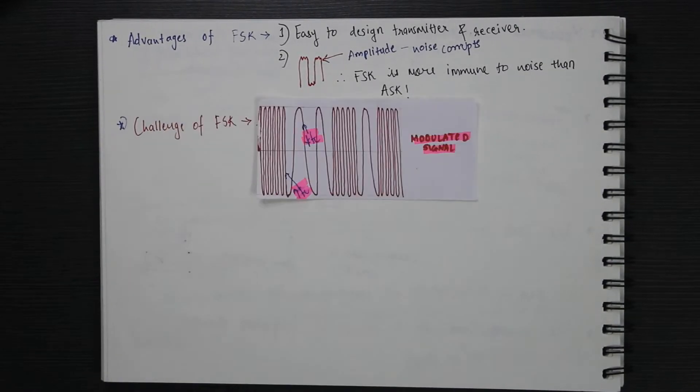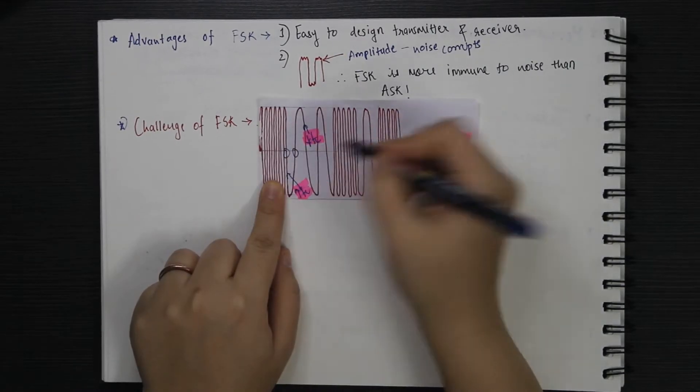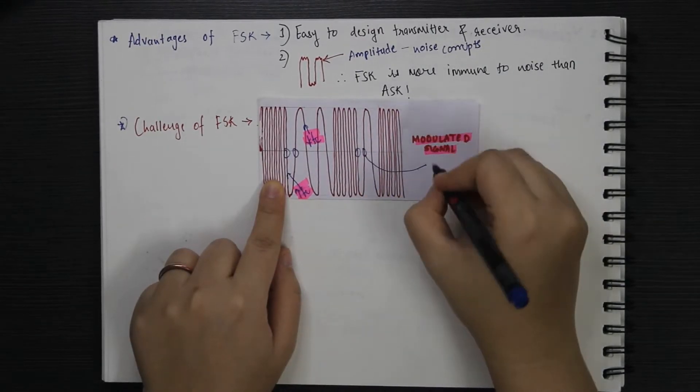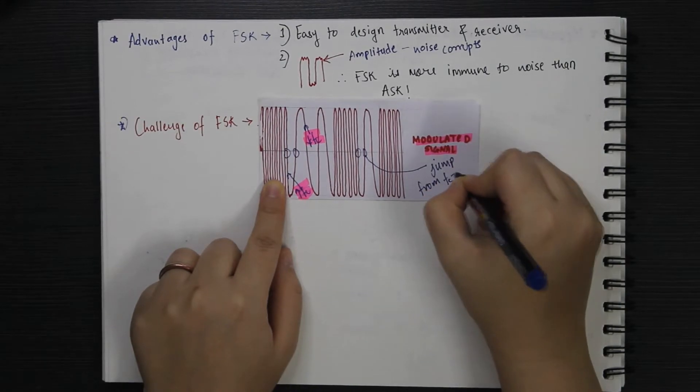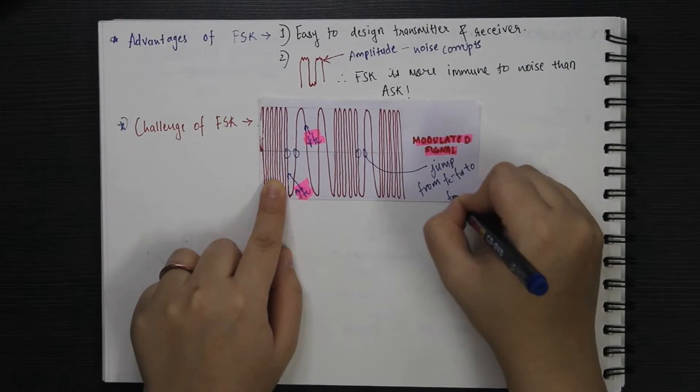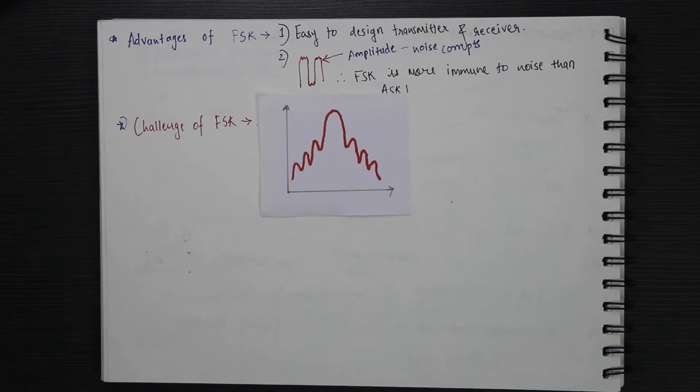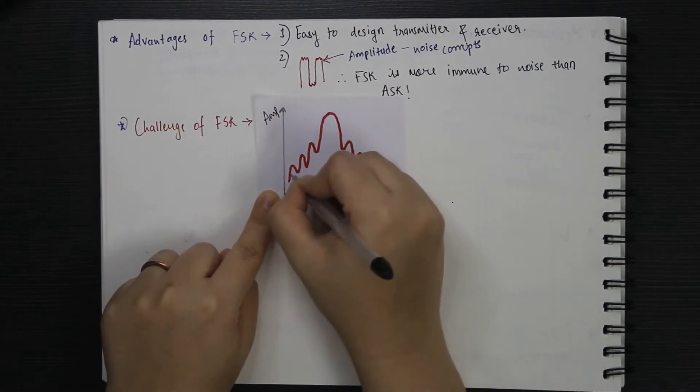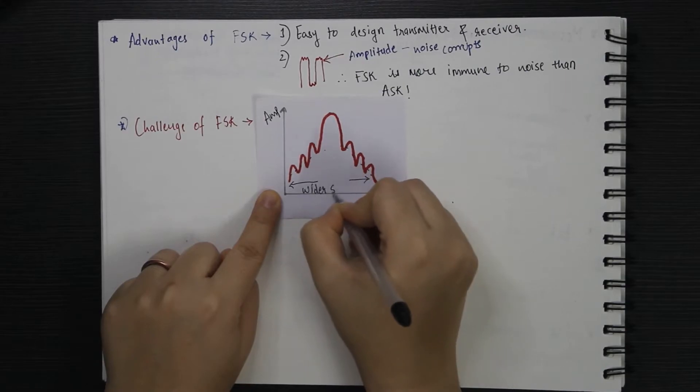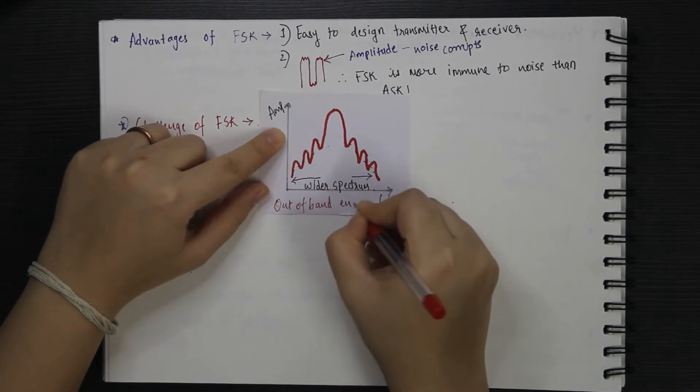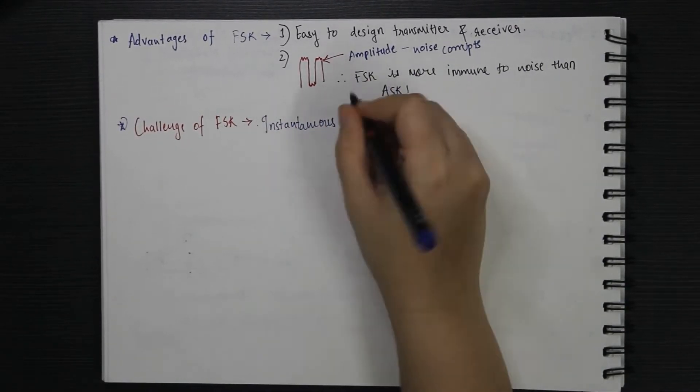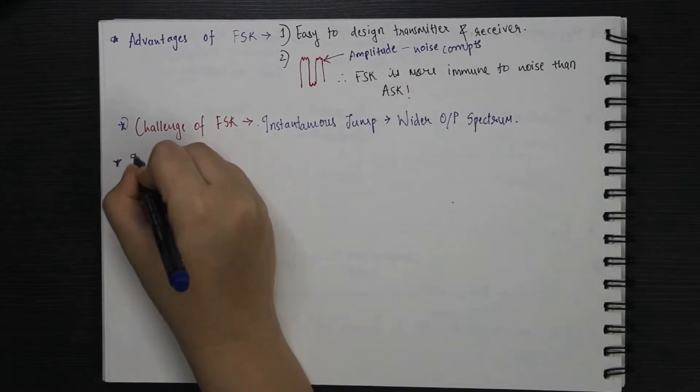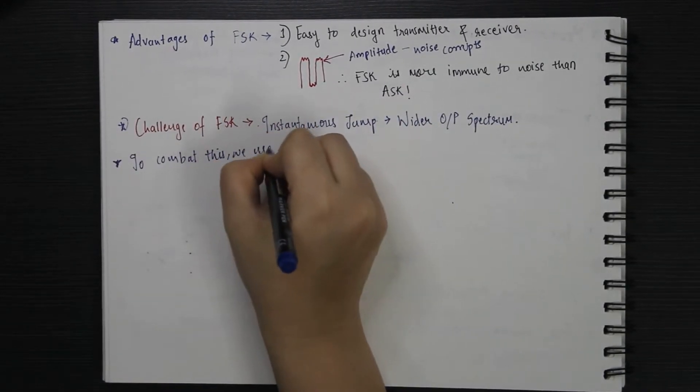One of the great challenges of FSK can be understood by examining the transmission of a zero followed by a one. It requires the signal to instantaneously jump from a sinusoid of frequency FC-FT to FC+FT, where FT is frequency deviation. This sharp switching generates higher frequency components at the output resulting in a wider output spectrum or significant amounts of out-of-band energy.